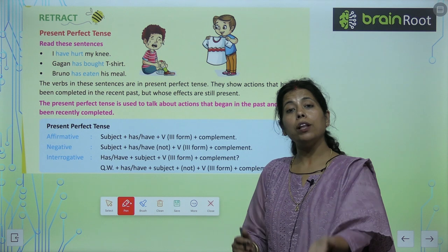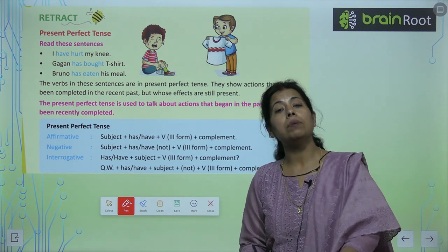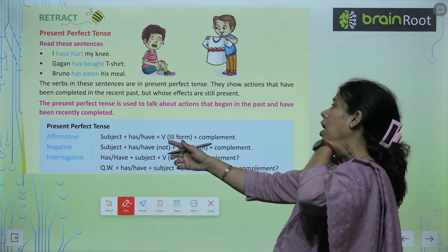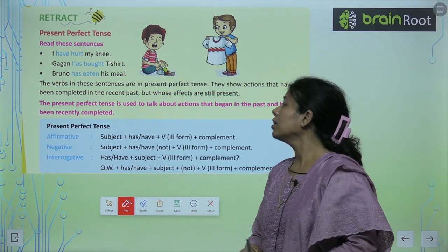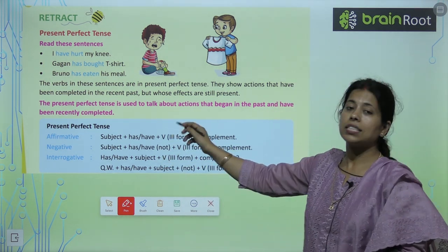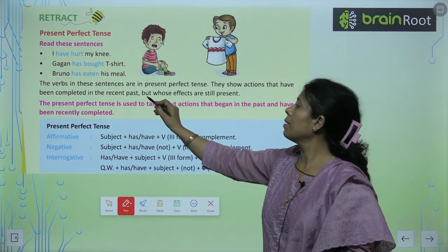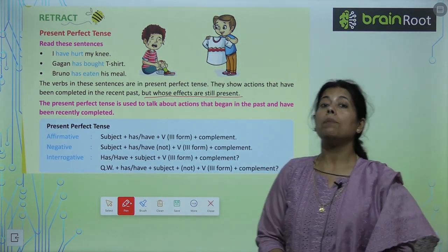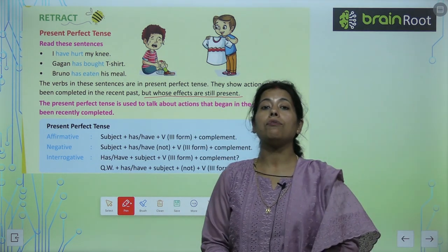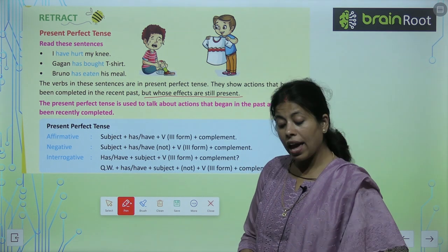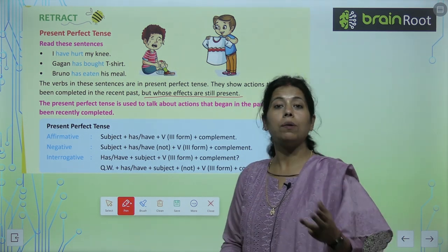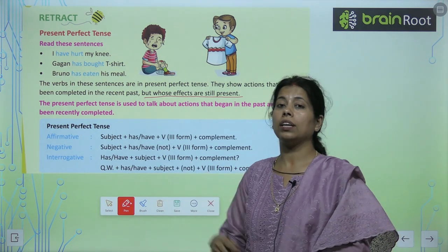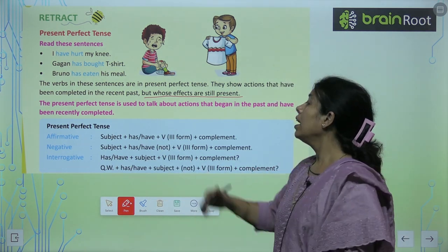The past may have been completely completed, but whose effects are still present — unka effect abhi bhi hai, abhi bhi present hai. Inke kuch rules hote hain, usko hum padh lete hain.